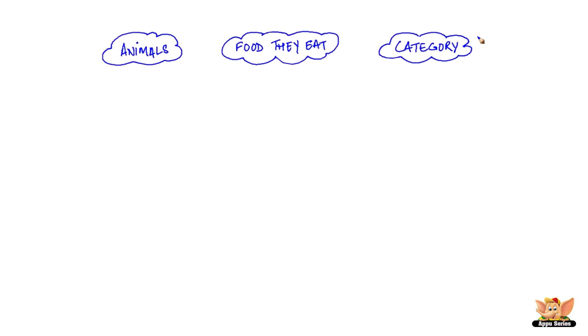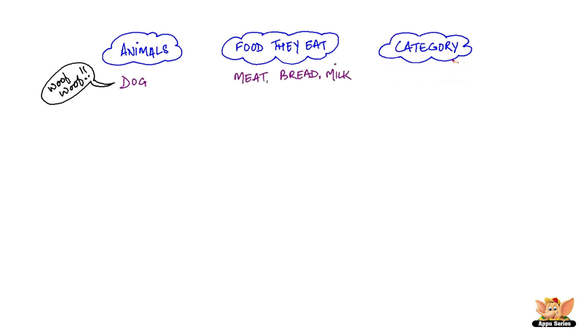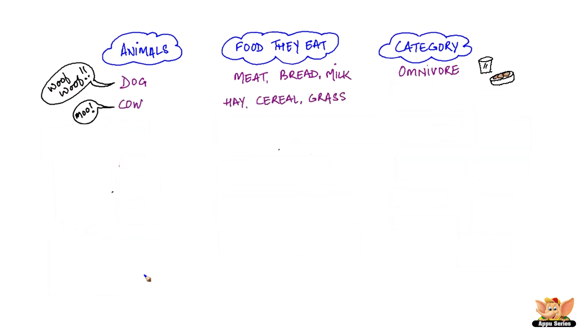Now let's have a closer look at animals, their foods and what category they fall in. Take dogs for instance — a dog eats meat, bread and milk, so that makes him an omnivore. A cow eats hay, cereal and grass, so a cow is a herbivore.